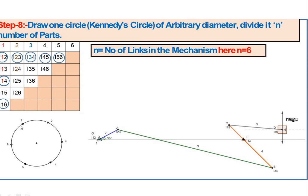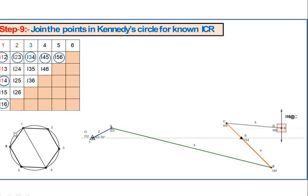Draw a circle and mark 6 points representing the 6 links. Join the known ICRs — I12, I23, I34, I45, I56, I16, and I14 — with straight lines on the circle diagram. These are the ICRs already located by rules 1, 2, and 3.